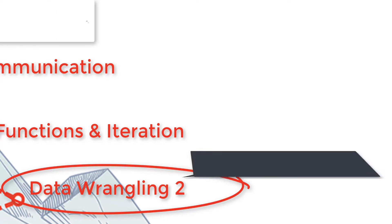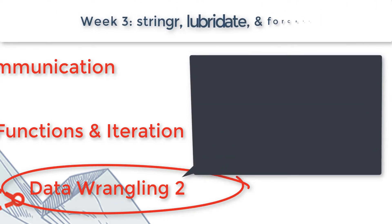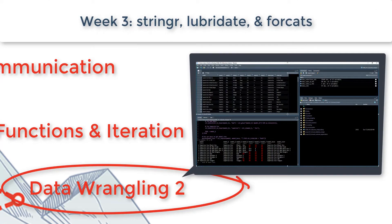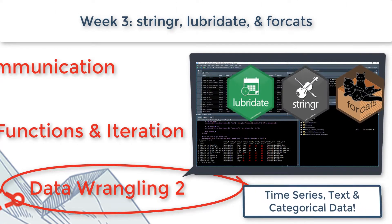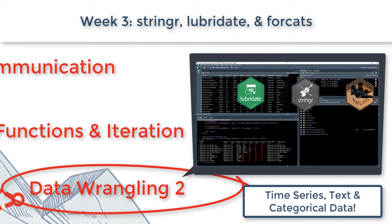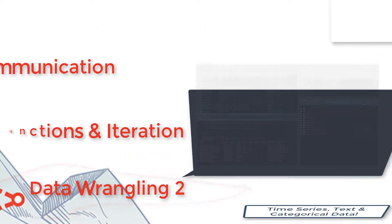Now we transition into the second level of data wrangling. This week, we focus on three key packages: Lubridate for time series, Stringer for text, and Forecast for categorical data.